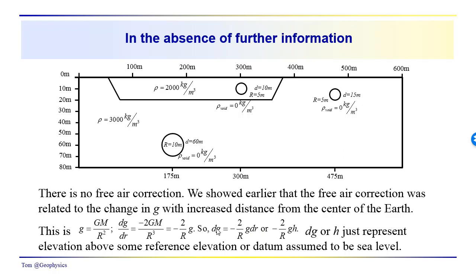This would be the changes associated with those changes in elevation, and that would be our free air correction. So dg, or h, just represents the elevation above some reference elevation or datum, which in this case we would assume to be 0 or sea level.